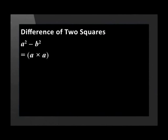To begin this lesson we will look at what we mean by the difference of two squares. Look at a squared — it is a perfect square, it is a times a. And b squared is a perfect square, it is b times b. If we have a squared minus b squared, the minus sign implies a difference between the two terms. So a squared minus b squared is called the difference of two squares.